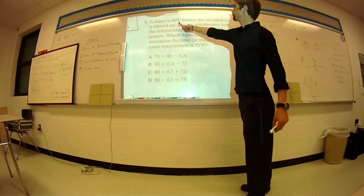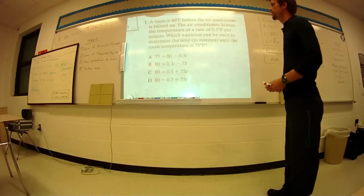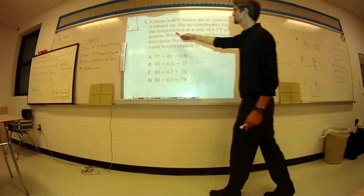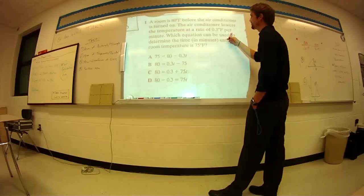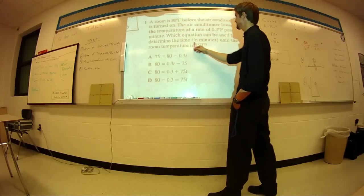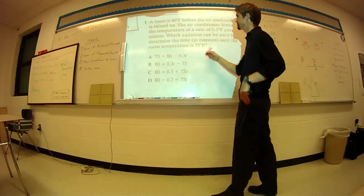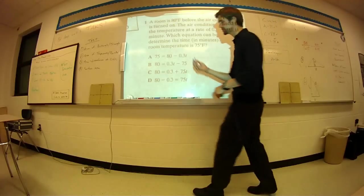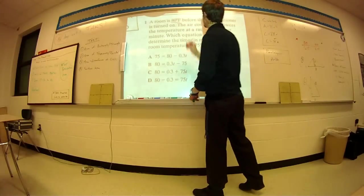So we'll read it over. Room is 80 degrees before the air conditioner is turned on. The air conditioner lowers the temperature at a rate of negative 3 degrees per minute, which equation can be used to determine the time in minutes until the room temperature is 75. So what's the important stuff?